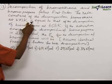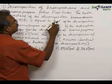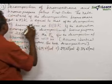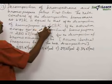673 Kelvin is equal to that is the rate constant of decomposition of bromopropane at 603 Kelvin.